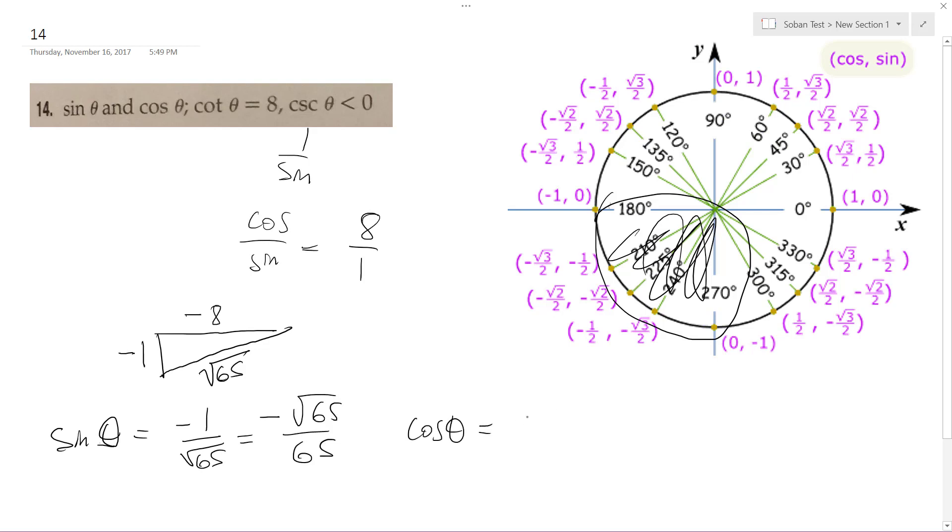Cosine is going to be equal to negative 8 over root 65, or negative 8 root 65 over 65. That's it.